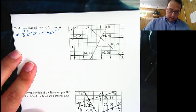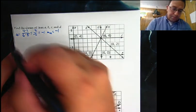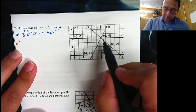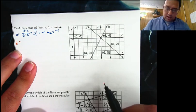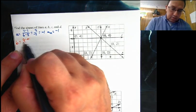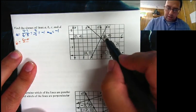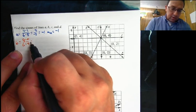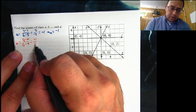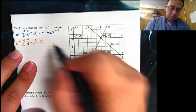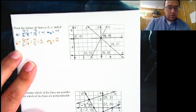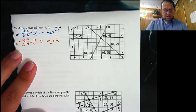Let's take a look at line B. My first point is at 6, 4 and the other is at 4, 0. Change in Ys: 4 minus 0 over change in Xs: 6 minus 4. 4 minus 0 is 4; 6 minus 4 is 2. That simplifies to 2. So the slope of line B is equal to 2. Pretty easy stuff.